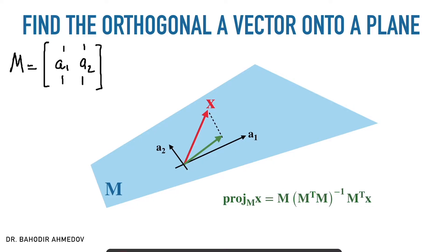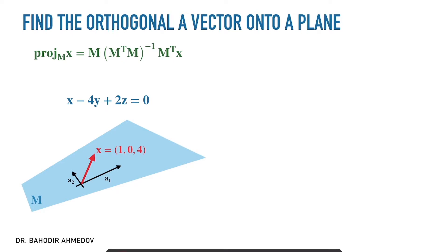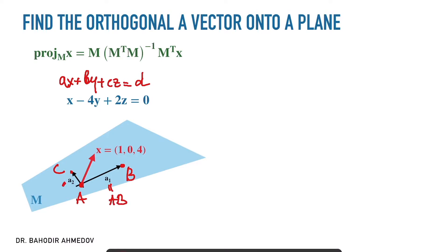In this video, we are going to do all of these calculations together. Usually when you are given the plane, you'll be given the general equation in the form of AX plus BY plus CZ equals D. From this equation, we are going to find two vectors on the plane and then later on form this matrix M. In order to find two vectors on the plane, we are going to find three points on the plane — point A, point B, and point C. The vector a1 is going to be simply the AB vector, and the vector a2 is going to be simply the AC vector. So how do we find the three points A, B, and C from the general equation of the plane?